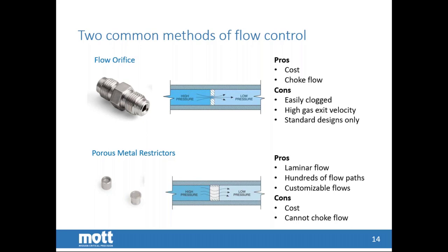I would like to emphasize the multi-flow path of the porous over the orifice, which is the one path. If you get particulate that hits that orifice, it plugs the orifice and immediately impacts your flow. With the porous metal restrictor, you have hundreds of flow paths, so if you get that one particulate that comes to the surface of the porous, it's not going to impact your flow. Over time, if enough particles build up, it will start to slow your flow down, but it will be a gradual decrease — it won't be an instant off.